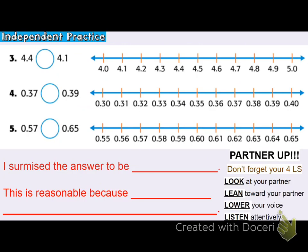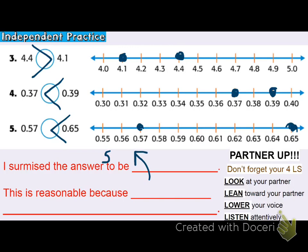I'm going to use the number line to solve problems 3, 4, and 5, making sure I plot those points and look for which value is on the right. 4 and 4 tenths goes here; 4 and 1 tenth goes here — 41 tenths is less than 44 tenths. 37 hundredths is here on the number line; 39 hundredths is here — I can see 39 hundredths is a greater value because it's on the right. For 57 hundredths versus 65 hundredths, 65 hundredths is definitely larger — it's further down the number line, way on the right. I know these are reasonable because of place value — a larger digit on the right of the number line means a larger value.